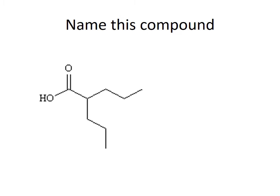Go ahead and name this compound. To name this compound, we find the longest chain — going down either path gives us five carbons. So this is going to be a pentenoic acid, and there's a propyl group on the number two carbon. So the name is 2-propylpentenoic acid.